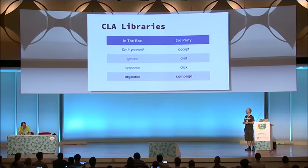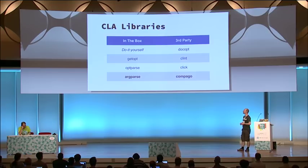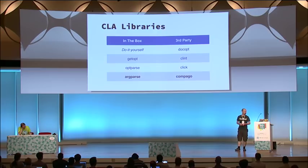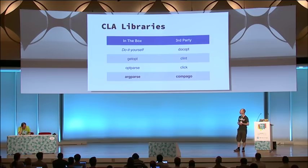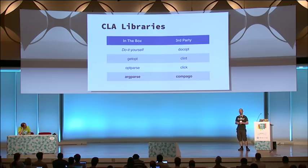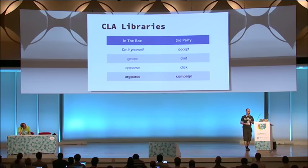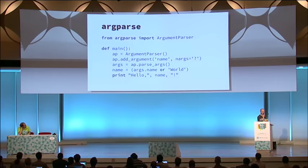Then there's Click, which has been creating a bit of a buzz recently — released by Armin Ronacher a couple of months ago. It looks pretty powerful, and I believe he's solved a lot of localization and encoding issues, so if you're running under lots of different locales, Click is probably a good option. Finally, we have Compago, which I don't think is a hugely popular library, but I like the approach it took, and I think it's simpler for certain things than argparse.